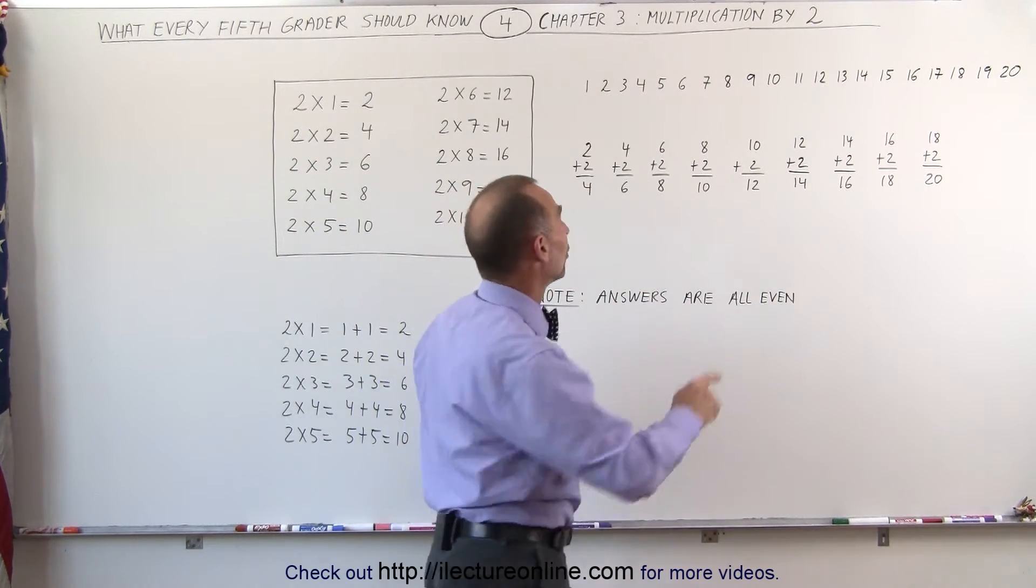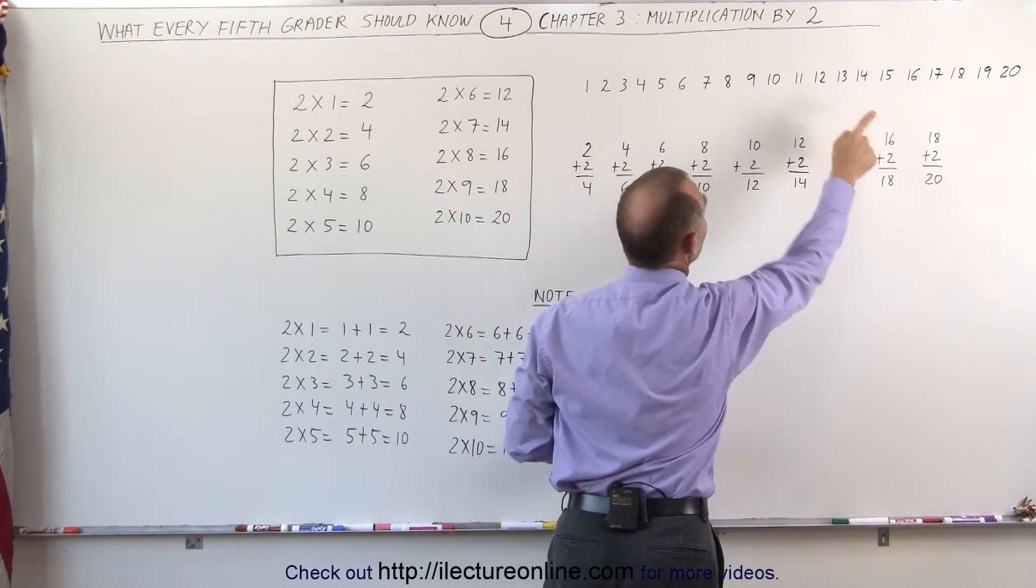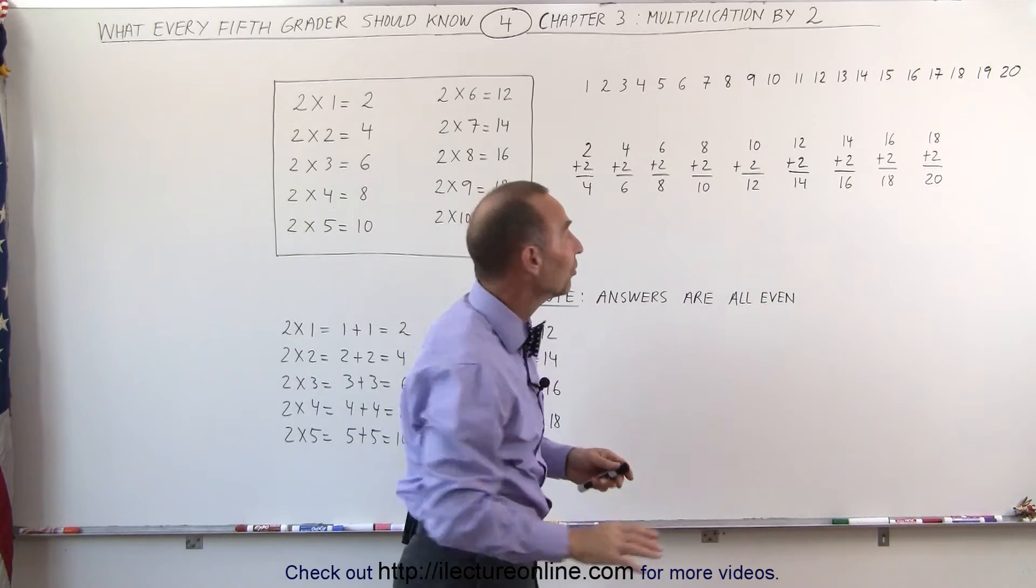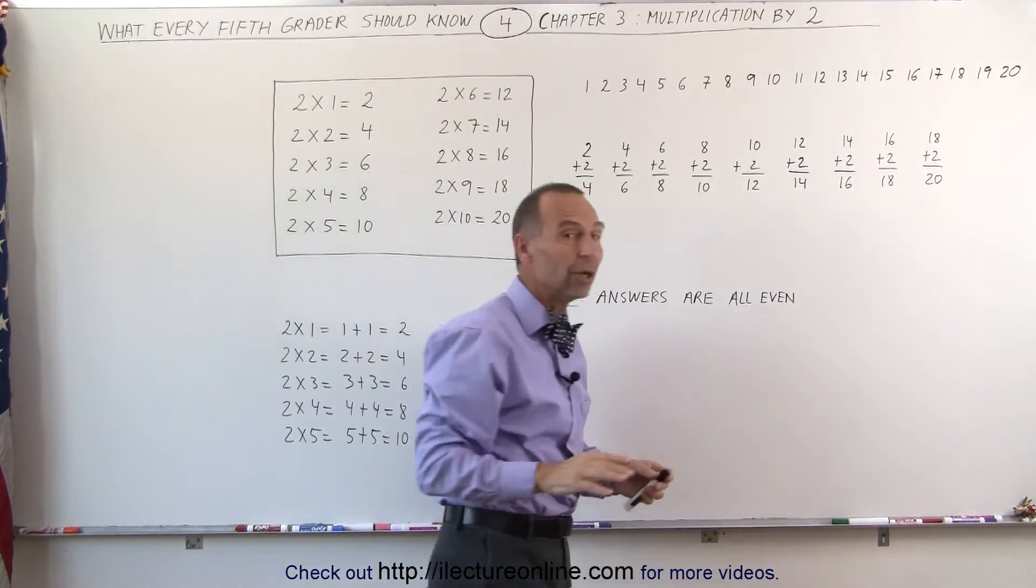Notice that the answer in each case is the second number, the even numbers. Notice that the numbers 1, 3, 5, 7, 9, 11, 13, and so forth, those are odd numbers. And the numbers 2, 4, 6, 8, 10, 12, 14, and so forth, those are even numbers.